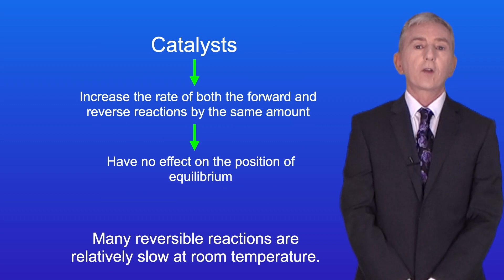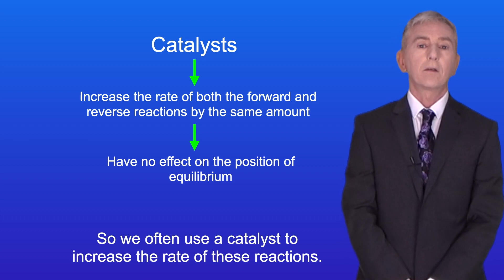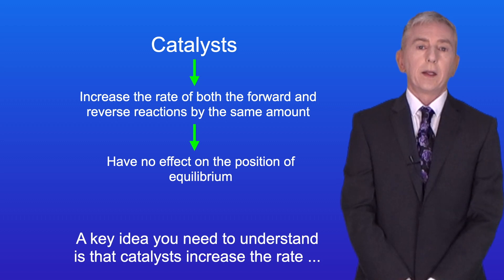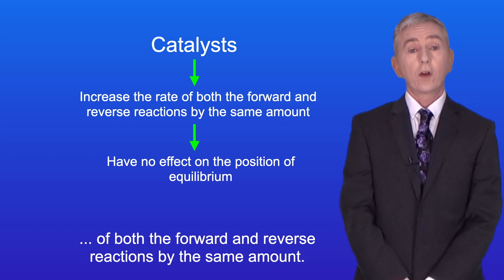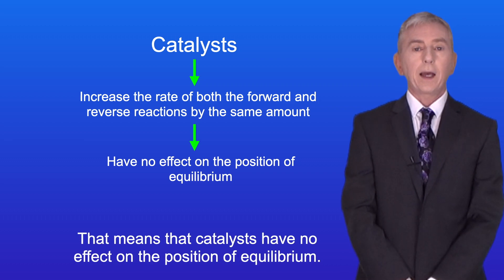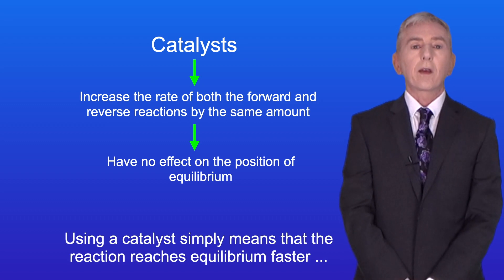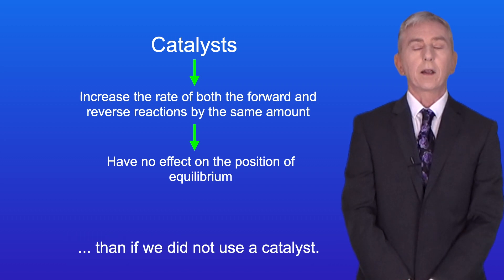Many reversible reactions are relatively slow at room temperature, so we often use a catalyst to increase the rate of these reactions. A key idea you need to understand is that catalysts increase the rate of both the forward and reverse reactions by the same amount. So catalysts have no effect on the position of equilibrium. Using a catalyst simply means that the reaction reaches equilibrium faster than if we did not use a catalyst.